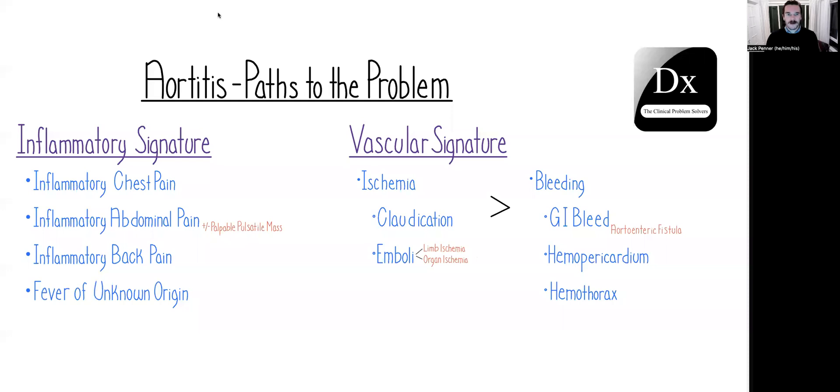Today, we're going to talk about what features a patient may present with that could lead us on the path towards discovering aortitis. I'm going to pull up the schema here briefly, but I'd encourage you to put the schema away as we talk through this and just think along with me as we discuss these different paths to the problem space of aortitis.